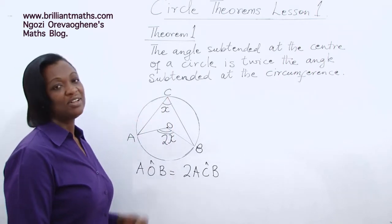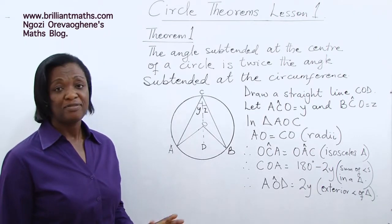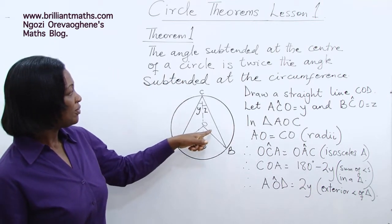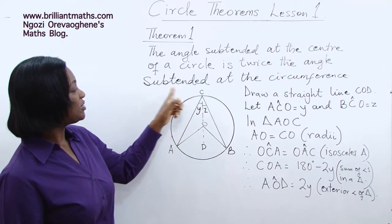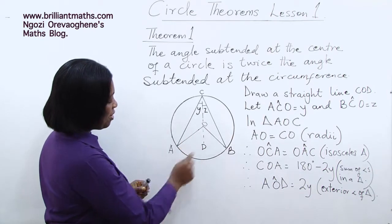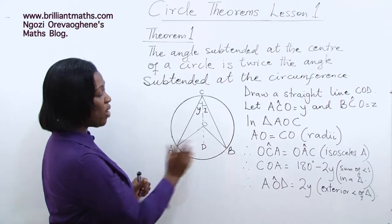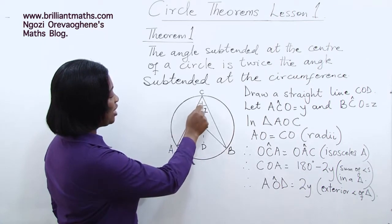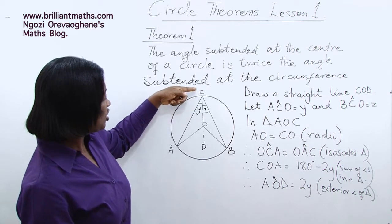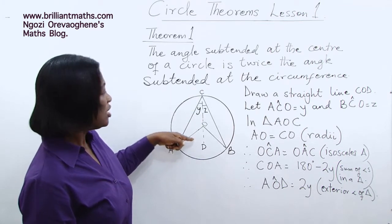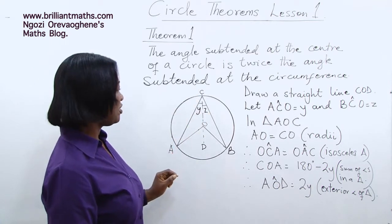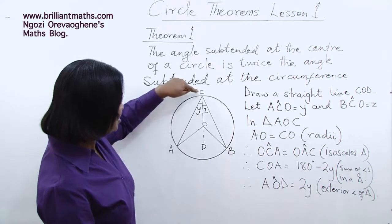Let's prove this theorem. We want to prove that the angle subtended at the center of a circle is twice the angle subtended at the circumference by the same arc AB. The first step is to draw a straight line C-O-D, in order to obtain two triangles with which we can prove the theorem.